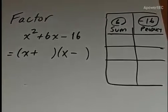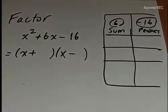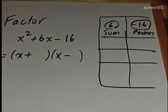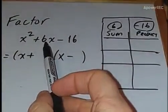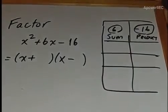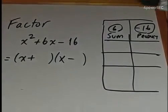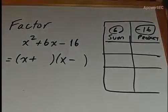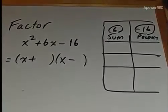Factor x² + 6x - 16 using our special sum and product rule. We have to look at the middle term, which is positive 6. So we have to create two numbers. When you add them together, they give you positive 6, and when you multiply them together, they give you negative 16.